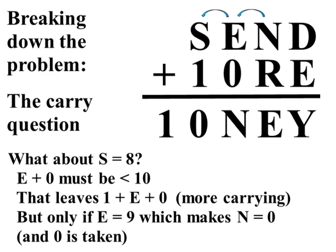Now, we know that there had to be a 1 carried from the previous column, the N plus R equals E, because otherwise, E plus 0 would just be E. It wouldn't be a different number.